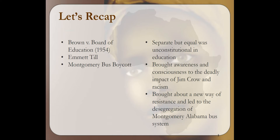If you joined us last week, I talked about three defining moments during the Civil Rights Movement: Brown versus the Board of Education, which challenged the separate but equal precedent established by Plessy versus Ferguson and resulted in the U.S. Supreme Court ruling that separate but equal was unconstitutional in education. We took a brief look at the impact of the Emmett Till lynching on African-American society and how the Montgomery bus boycott brought about a new way of resistance and led to the desegregation of the Montgomery, Alabama bus system as a result of precedent set by Brown versus Board of Education.